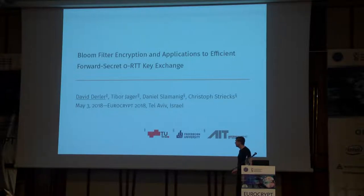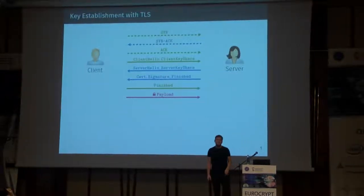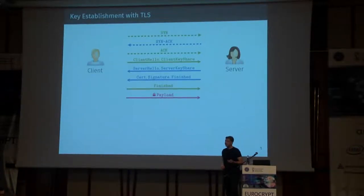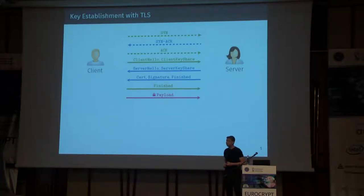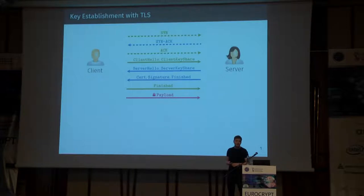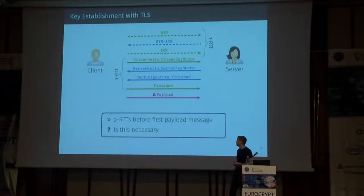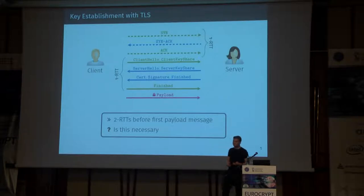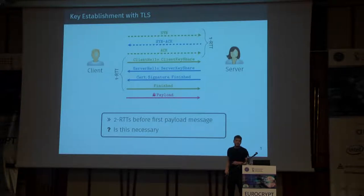Thanks for the introduction. As far as the basic RTT key exchange session, we see Gershne as the main application. If you look at some standard TLS protocols, for instance, you will notice that you have to send back and forth some messages before you can eventually agree on some secret, which can then be used to exchange encrypted data between client and server. And the question we basically ask is: how can we reduce those round trips which are required?